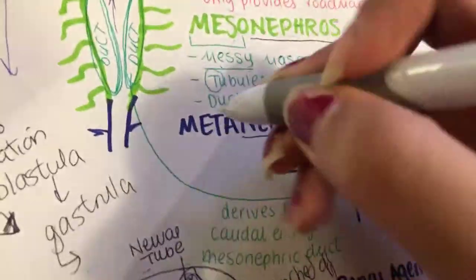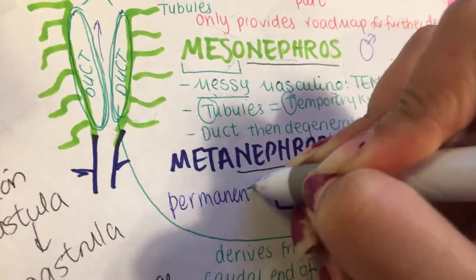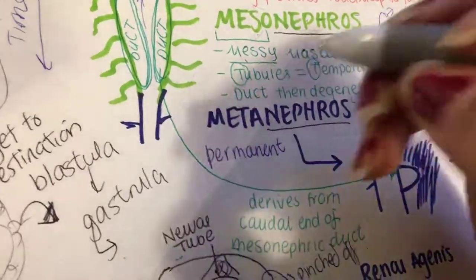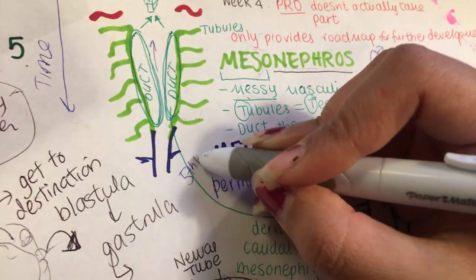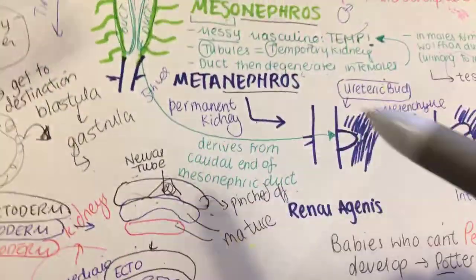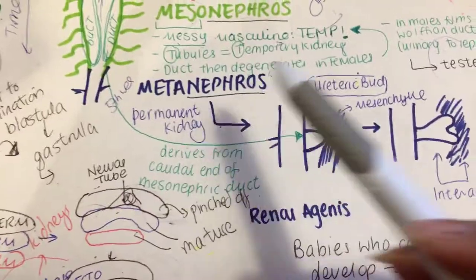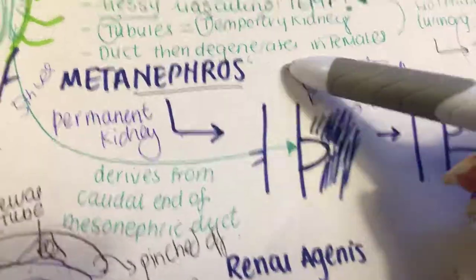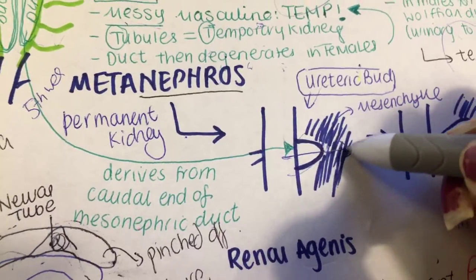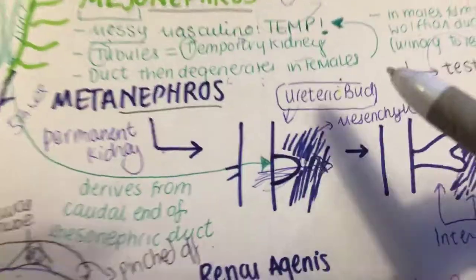The final part is the meta-nephros — our permanent kidney. This is the mature kidney, and it also appears in the fifth week of gestation. There are a couple of key parts here. In a zoomed-in drawing of the meta-nephros, you can see that something starts to protrude — and that is the ureteric bud.